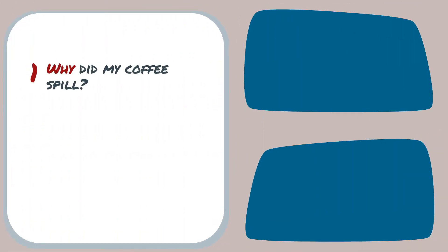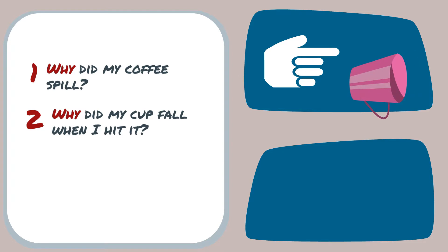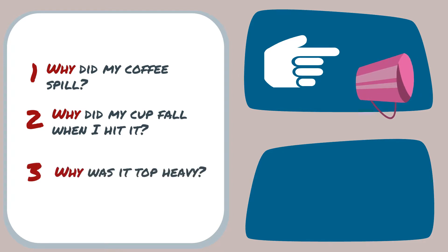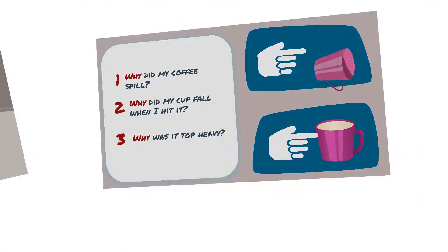We start from the beginning, but change the second why. Rather than asking why I hit the cup, we ask: why did it fall? The cup was top-heavy and lost balance easily. Why? The base of the cup is small and the top is wide. Here is an actionable cause. If I use a different cup with a wider bottom, my coffee won't spill, even if I bump it.